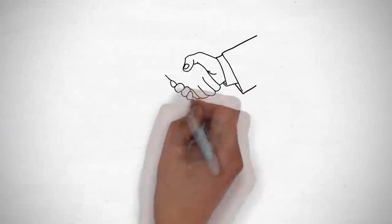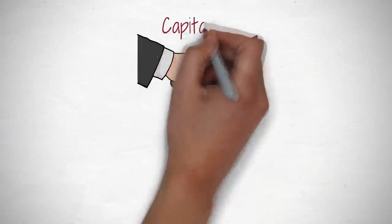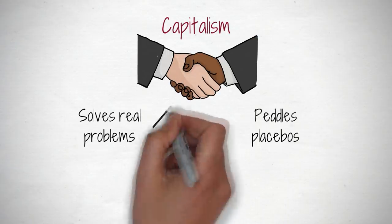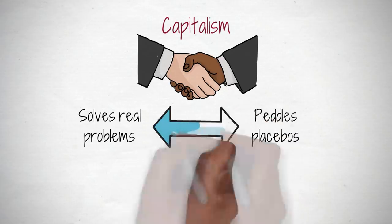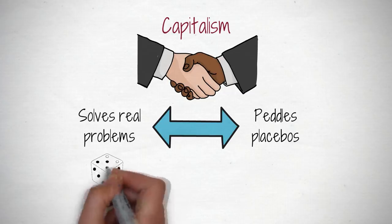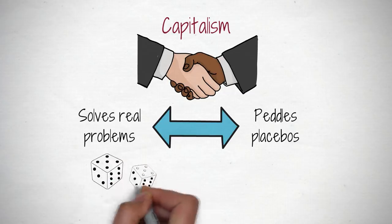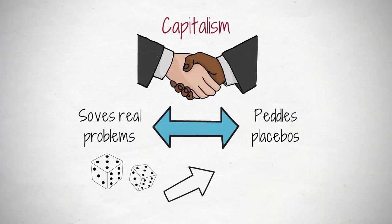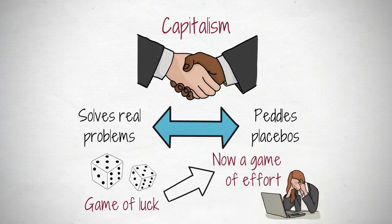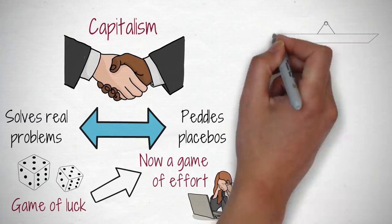There are two types of capitalism — the kind that solves real problems, and the kind that peddles placebos. The latter thrives on information asymmetry. While con artists and scammers have been around for millennia, they've had to be a lot more creative since the rise of the internet. The wide dissemination of information at no cost has shrunk the gap. What used to be mostly a game of luck has now become a game of effort, but we avoid it just the same.